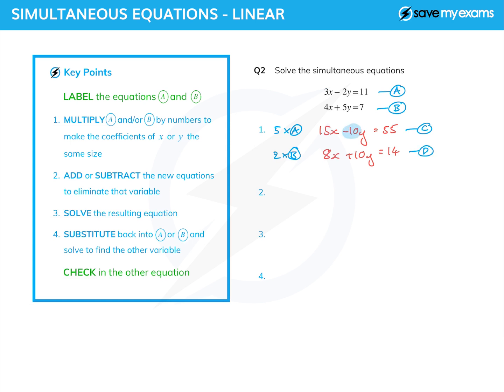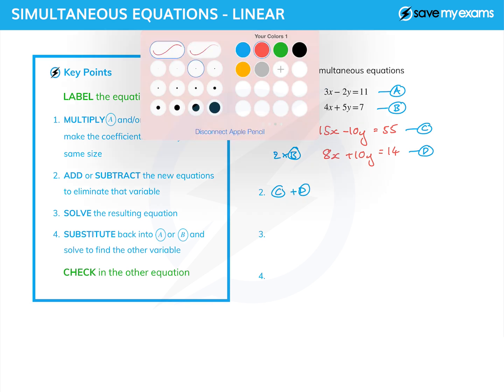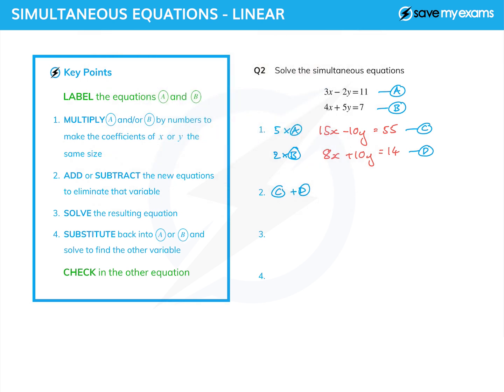And now, although they've got different signs, the coefficients of y, the numbers in front of the y, are the same size. And because they've got different signs, I'm now going to add the equations together. So I do C plus D. And 15 plus 8 is 23. So I get 23x. I get no y's. That was the whole point of doing this. And I get 69 on the right.